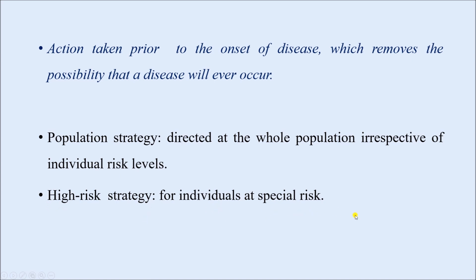The second strategy is the high-risk strategy, which targets individuals at special risk. For example, women belonging to the reproductive age group are more prone to developing nutritional anemia — specifically iron deficiency anemia. We can ensure that they take iron folic acid tablets regularly as per the schedule. That is a measure for the high-risk population, and this is called the high-risk strategy. That is all about primary prevention.